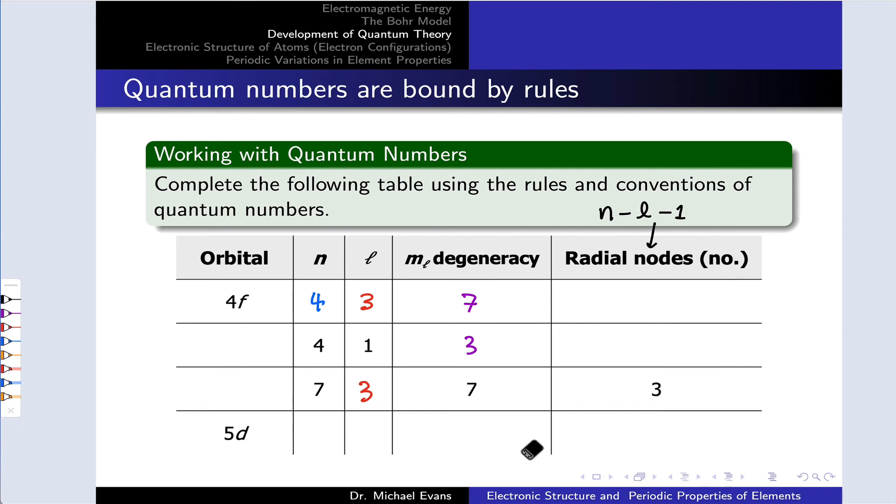And finally, in the last row, we're kind of playing the same game we did in the first row. 5d means the value of n is 5. The value of L is 2. The m sub L degeneracy is then 5, because we're in a d subshell with possible values of m sub L running from negative 2 to positive 2, and so on from there.